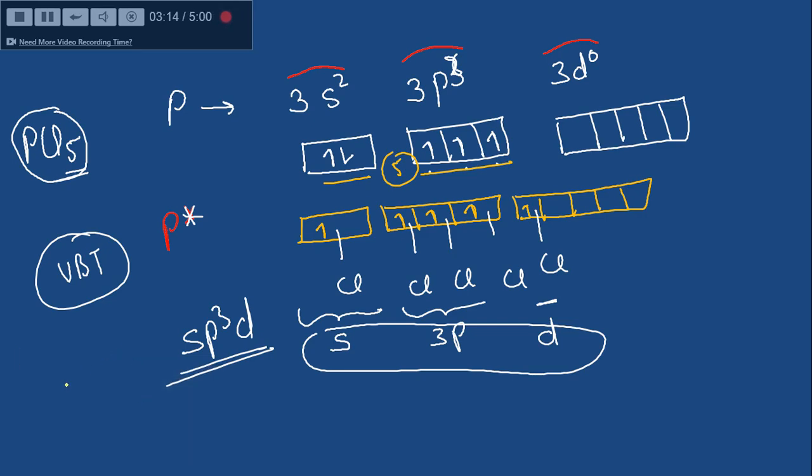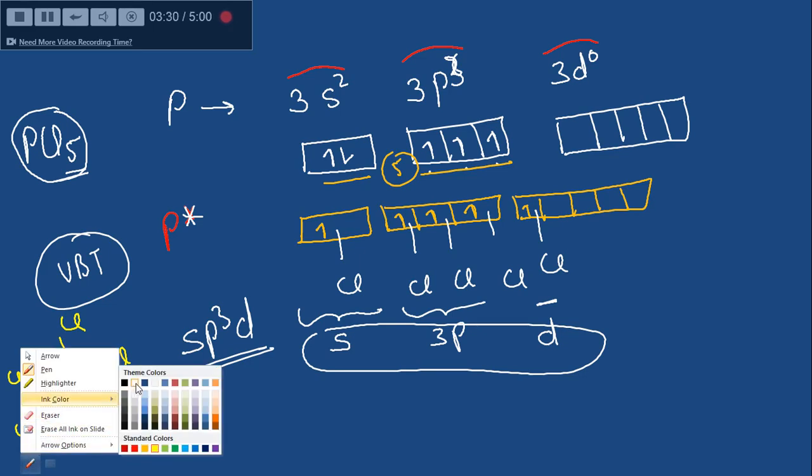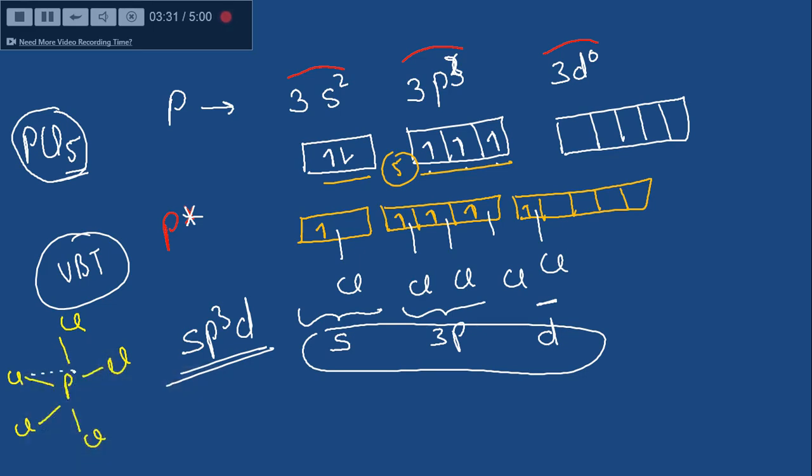That means there would be phosphorus in the center, three chlorines at the corners of a triangle, one above the plane, another below the plane. So total, the structure is trigonal bipyramidal, like this.